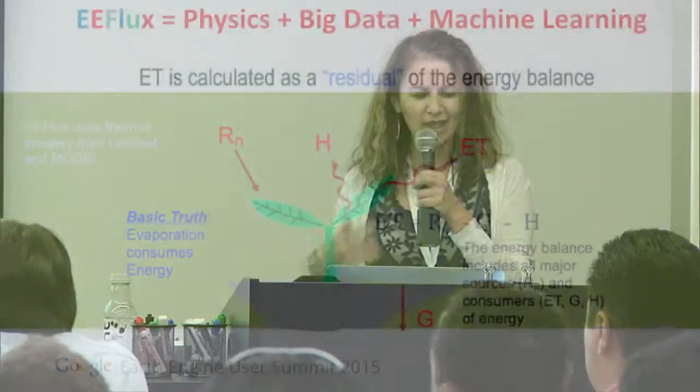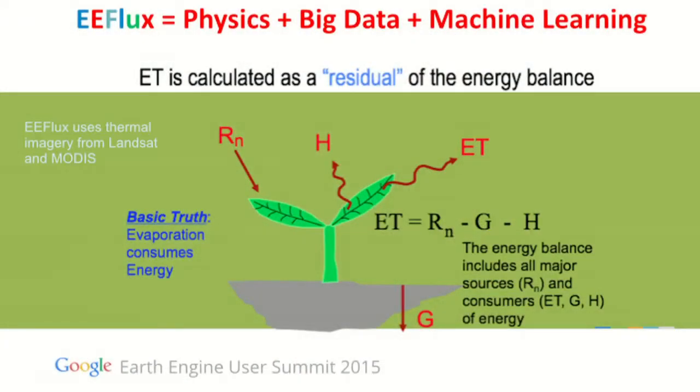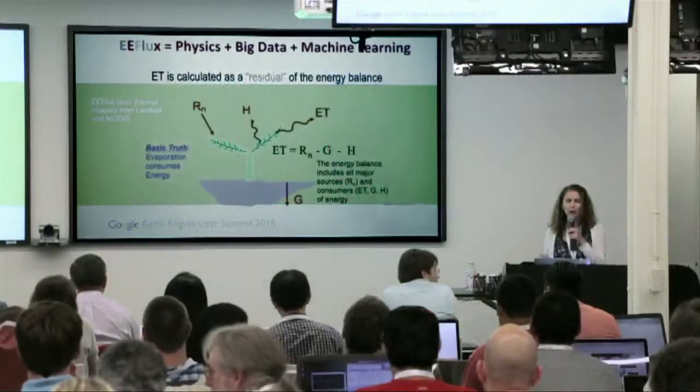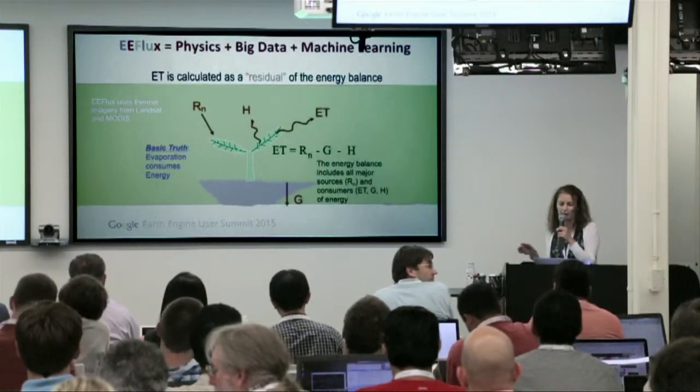It's been two years of effort — we've been working on this and we're going to get there. EFLUX is really, at its core, a complete land surface energy balance model. It needs thermal imagery, and that's why we can use either Landsat or MODIS, but we prefer Landsat because we would like to see water consumption at the field scale from 30 meters.